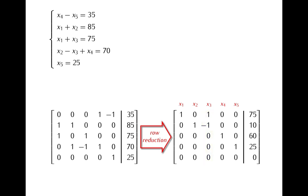The solutions of the system are then as follows. From the first row of the matrix we get that x1 is equal to 75 minus x3. The second row gives that x2 is equal to 10 plus x3. Then as we already know x3 is a free variable. Then from the third row of the matrix we get that x4 is equal to 60. And finally from the fourth row we obtain that x5 is equal to 25. And so these are the solutions of our system.